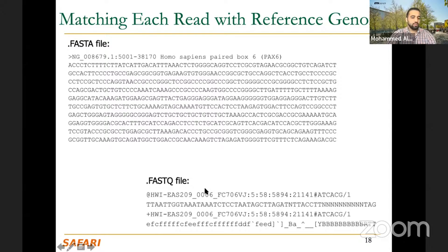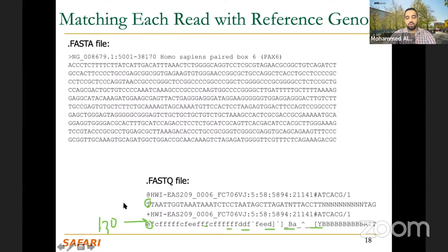The fourth line is the sequencing quality of each base. For example, you see an ASCII character like E. You convert this ASCII character into a percentage — for example, 30%. That gives you the confidence that the sequencing machine has when it produced that base. If it is very confident, you will see a different character. All these characters are in ASCII format, and you can convert each of them into a percentage or a number that tells you the quality of that base, whether it's high or low. The higher the better, because you have higher confidence that this is true. Then when you do the matching to the reference genome, you are very confident that this exists in your DNA.